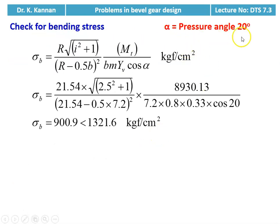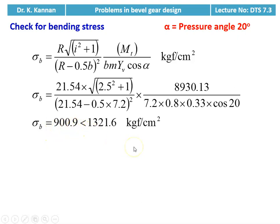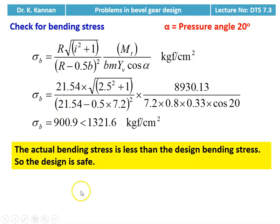Next we check for bending stress. Pressure angle alpha = 20° always for bevel gear. sigma_b = R × √(i² + 1) / (R − 0.5b)² × MT / (b × m × Yb × cos(alpha)). Substituting all numerical values, sigma_b = 900.9 kgf/cm², which is less than the design bending stress of 1321.6 kgf/cm². The actual bending stress is less than the design bending stress, so the design is safe. Whatever we calculated is safe with respect to surface stress as well as bending stress.